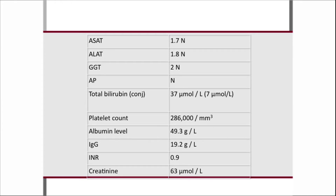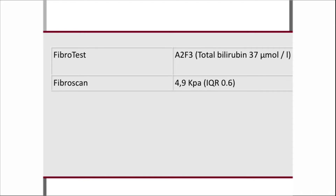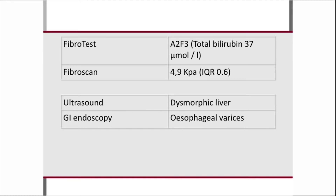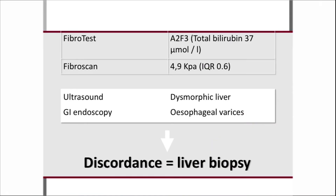There were no signs of hepatocellular insufficiency. His FibroScan was 4.9 kPa — normal — yet this was discordant with his clinical picture. An ultrasound showed the liver looked strange, endoscopy was performed, and he was found to have varices. He underwent a liver biopsy.